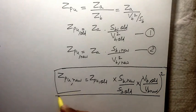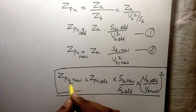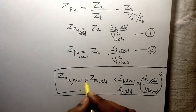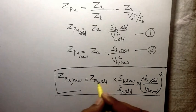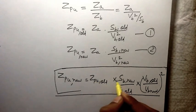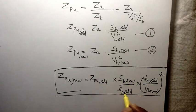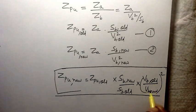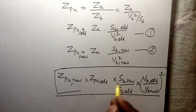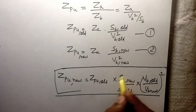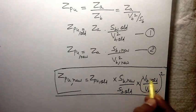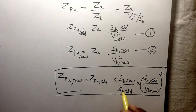To repeat: the new per-unit value of the impedance equals the old per-unit value of the impedance times (S_base_new / S_base_old) times (V_base_old / V_base_new) squared. Remember, the new base power appears in the numerator and the old base voltage appears in the numerator.